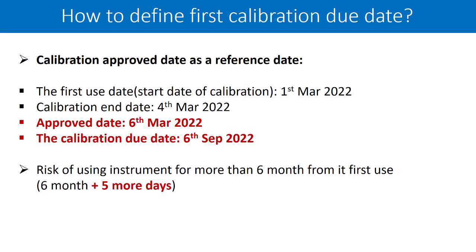Let us understand what happens if we implement this approach. There is a risk of using the instrument for more than 6 months from its first use. In this case, if I calibrate the instrument on 6th September 2022, I am actually allowing 5 more days in addition to the 6-month calibration window. I am allowing instrument usage of 6 months plus 5 more days. Hence, this is not a conservative approach in its nature.